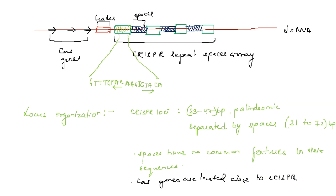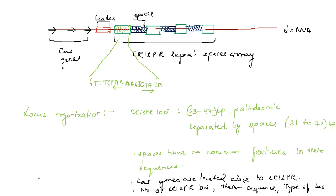The number of CRISPR loci present in an organism, their sequence, and the type of Cas gene all vary among species. This is about the locus organization.